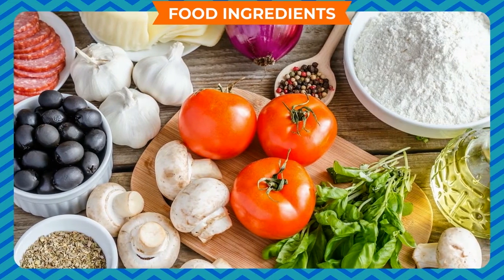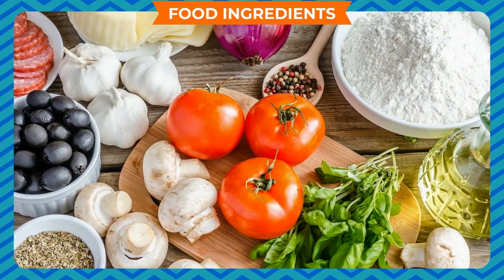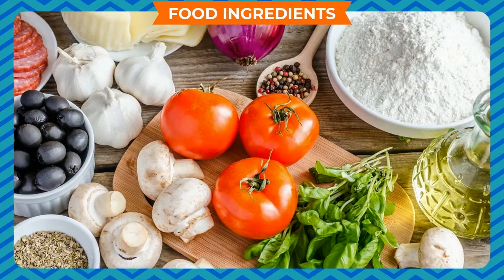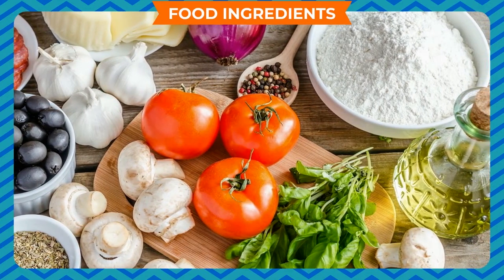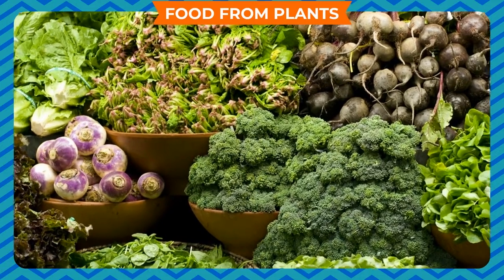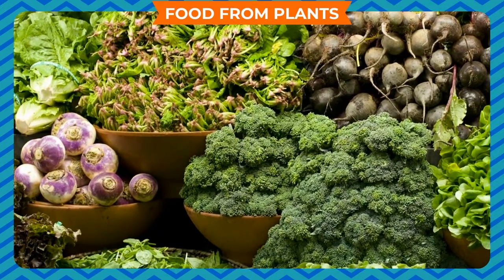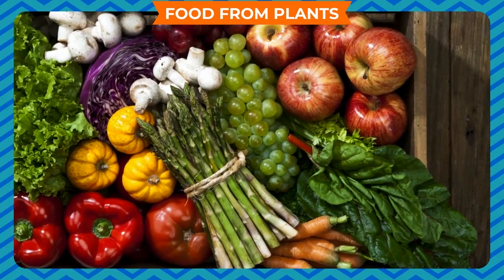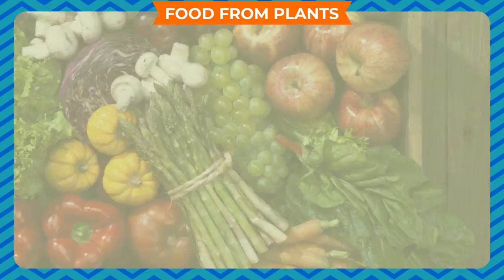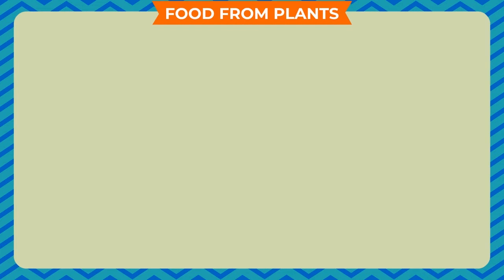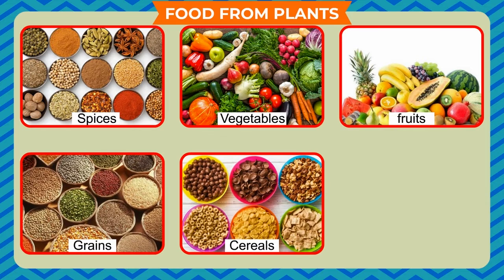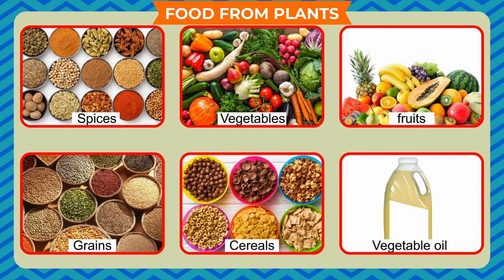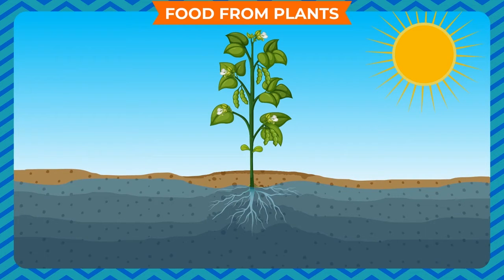Although most of the ingredients are brought from the market, the question is: what are the sources of these ingredients? Food from plants: As we know, plants are the main source of food on the earth. We get so many food ingredients like spices, vegetables, fruits, grains, cereals, and vegetable oil from plants.